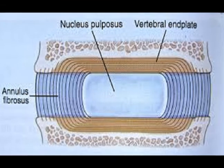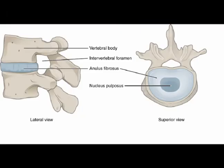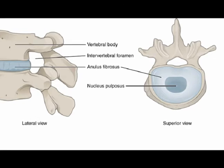The nucleus pulposus, often abbreviated to NP, is a gel-like structure with the consistency of toothpaste. Proteoglycans attract water, which supports the disc's structural integrity. The transition from the nucleus pulposus to the annulus fibrosus is gradual, occurring from the central portion of the disc moving laterally in all directions.